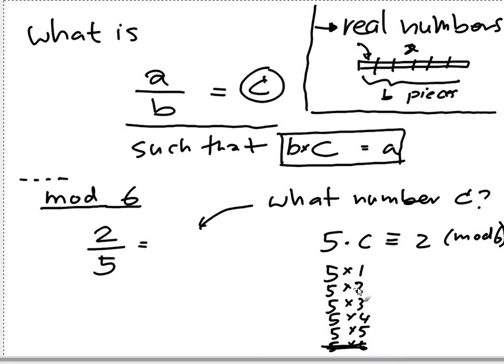So it's 0. 5 times 1 is 5 mod 6 is 5. 5 times 2 is 10, which is equal to 4. 5 times 3 is 15, and that's 3 mod 6. 5 times 4 is 20, and that's 2 mod 6. 5 times 5 is 25, and that's 1 mod 6. But we want 2. So, we know that 5 times 4 is equal to 2 mod 6. So, we say that this is 4.